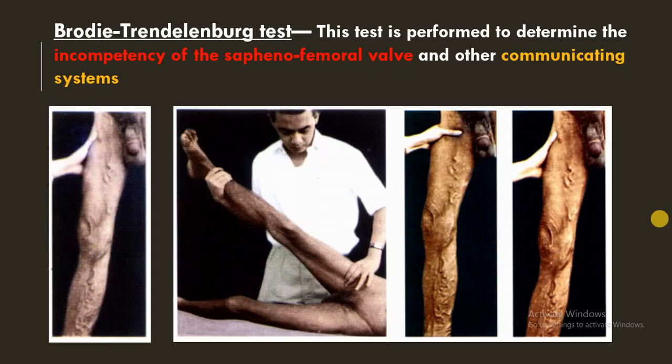First is the Brodie-Trendelenburg test, performed to determine the incompetency of the sapheno-femoral valve and other communication systems. In both methods, the patient is first placed in the recumbent position and the legs are raised to empty the veins. The sapheno-femoral junction is then compressed with the thumb of the clinician. In the first method, the pressure is immediately released. If the varices fill very quickly by a column of blood from above, this indicates a positive Trendelenburg test, signifying incompetency of the sapheno-femoral valve.